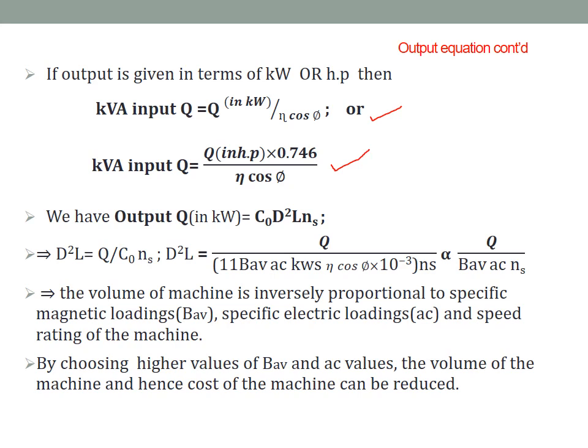D²L is proportional to Q / (B_avg × AC × Ns), as the other factors are constants. The volume D²L of the machine is inversely proportional to specific magnetic loading, specific electric loading, and the speed rating of the machine. If you choose higher values of B_avg, the volume of the machine can be reduced. Similarly, if you choose a high value of AC, the volume, size, and cost can be reduced. If you go for a higher speed rating machine, the size will become small, provided there is no restriction on speed.